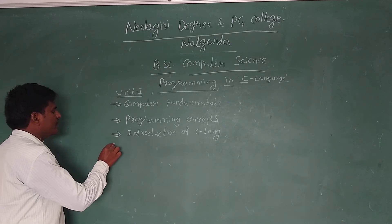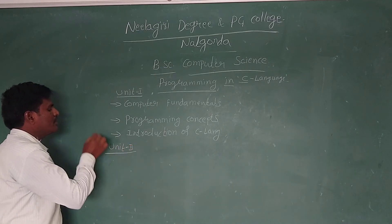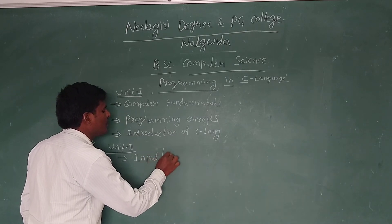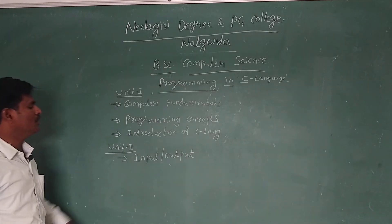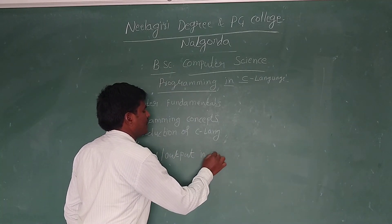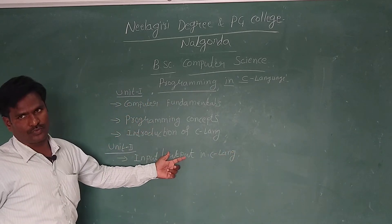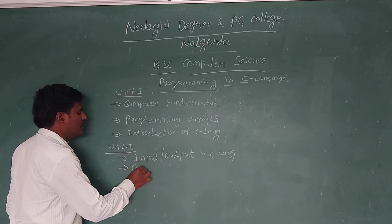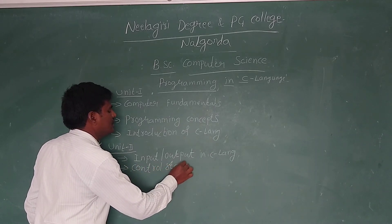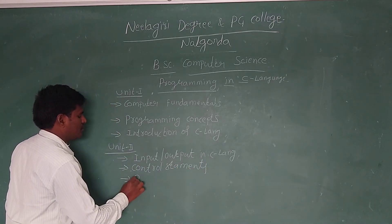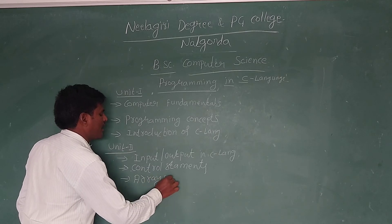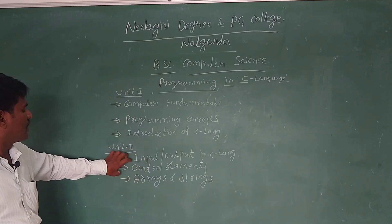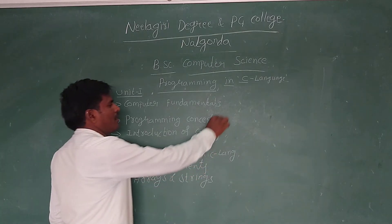In the second unit, we will mainly discuss the input and output functions used to give input or output to the program — what are the input and output operations in C. Then some control statements will be discussed, and the third topic is arrays and strings.